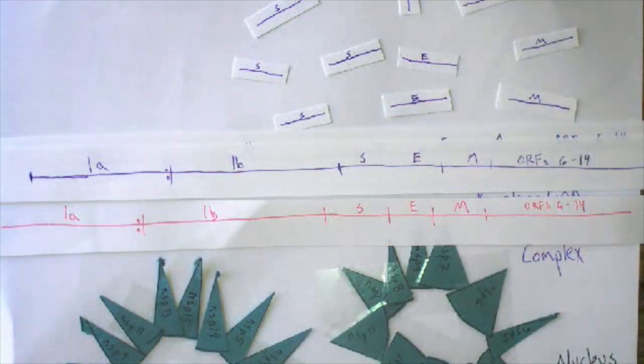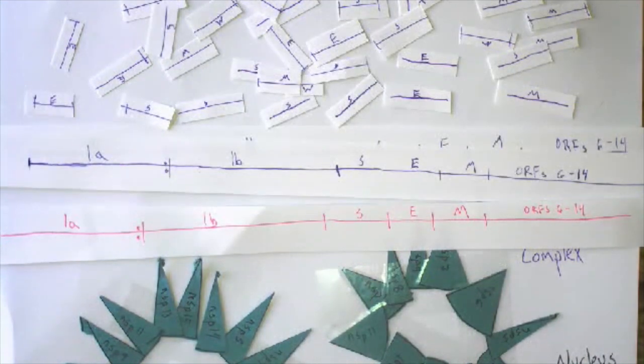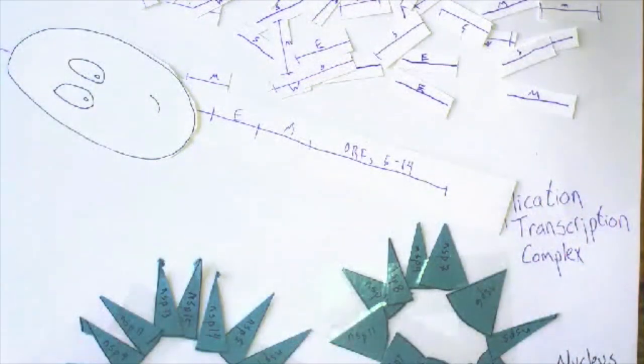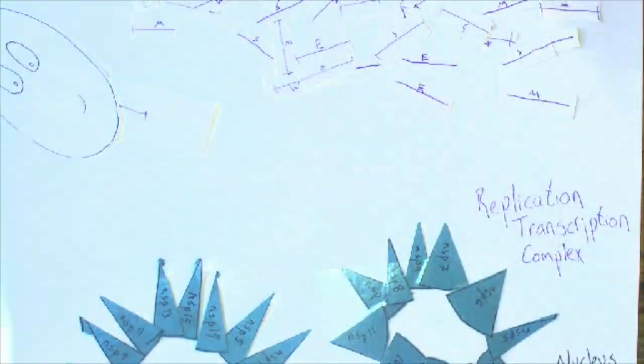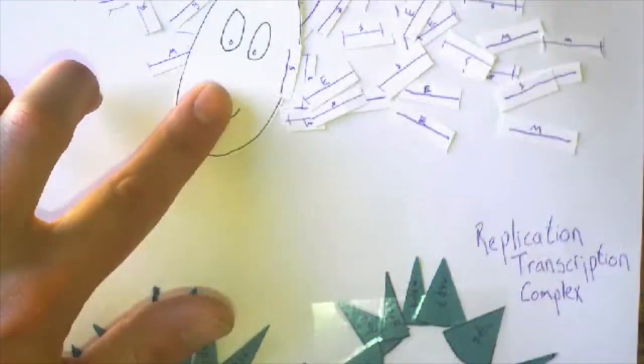At a certain point, your cell is producing so much viral RNA that the majority of your RNA stops getting processed. As the positive strands of the virus get formed, they attract nucleocapsid proteins towards themselves and start to wrap themselves up.